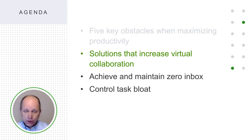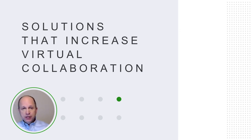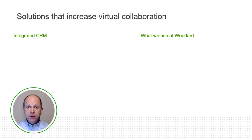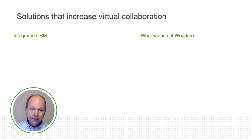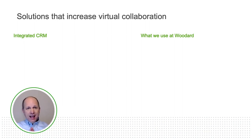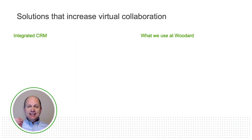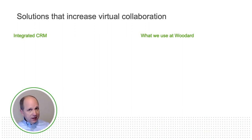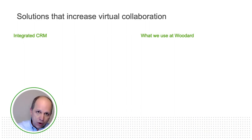Now that we've dealt with the five key obstacles, we can address solutions that increase virtual collaboration. The first solution you should prioritize in this work-from-home environment is CRM. A lot of accountants say, "I don't need CRM because I don't really sell a lot of stuff." But it's not an SRM — a sales resource manager. It's a CRM, a customer resource manager — or in your case, client resource management. It's everything about the relationship: delivering with excellence, documenting relationships, making them stronger and stronger.